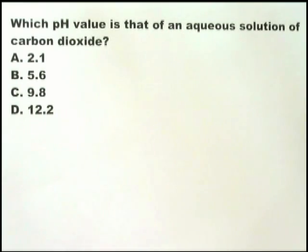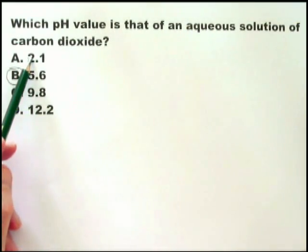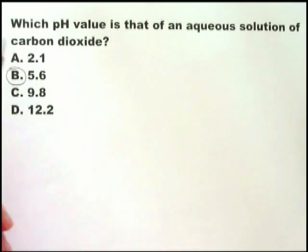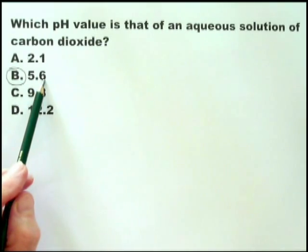In this question, the examiner is asking you if you know that carbon dioxide is a weak acid. Therefore, you must know that the pH value of weak acid is something like 5.6. Anything from 5 upwards towards 6.5, 6.8, would be regarded as a weak acid. You would be expected to know that 2.1 refers to a strong acid, and 12.2 refers to a strong alkali, and 9.8 refers to probably also a strong alkali but a more dilute solution of sodium hydroxide.